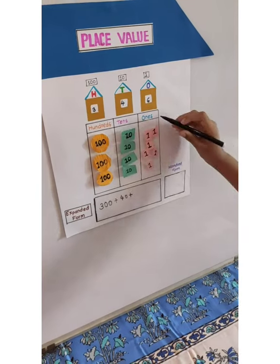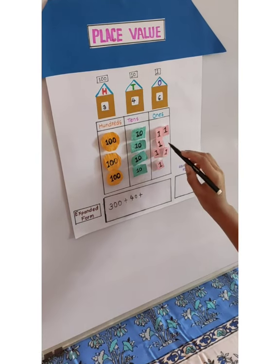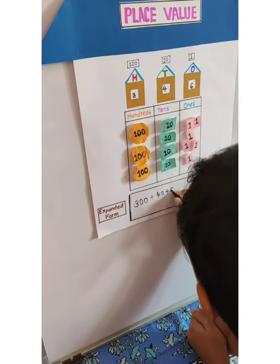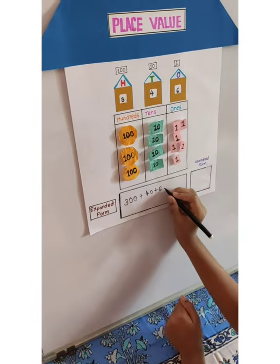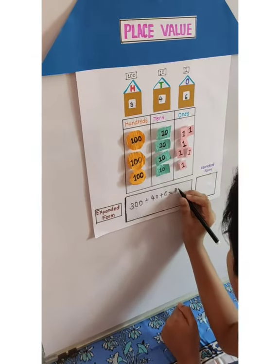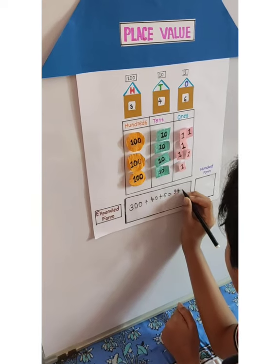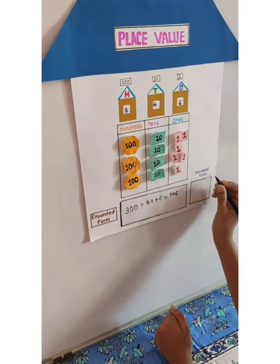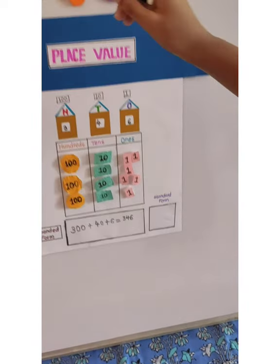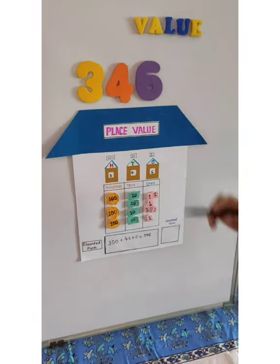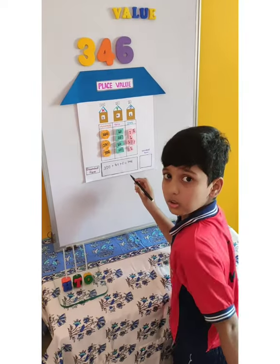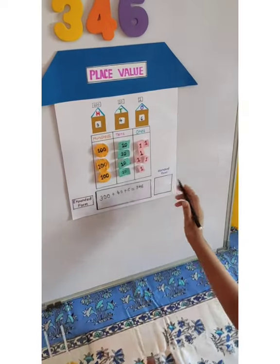Now let's see the ones place: 1, 2, 3, 4, 5, and 6. So 6 is equal to 346. Now the standard form — the standard form means the number itself — so the standard form is 346.